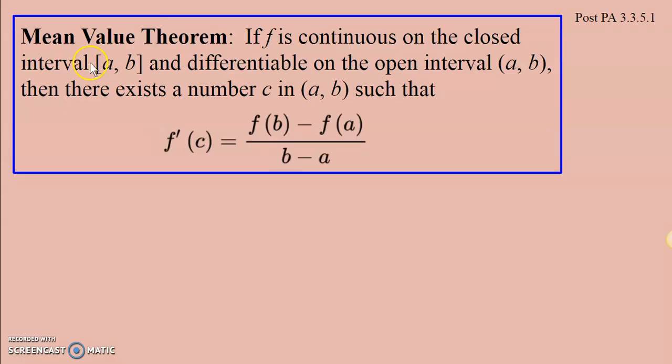So here, think of the word mean. Mean means average. So what we're doing is we're finding this average rate of change here, f of b minus f of a over b minus a, and we're saying that that average rate of change is equivalent to an instantaneous rate of change somewhere between those two values of a and b.